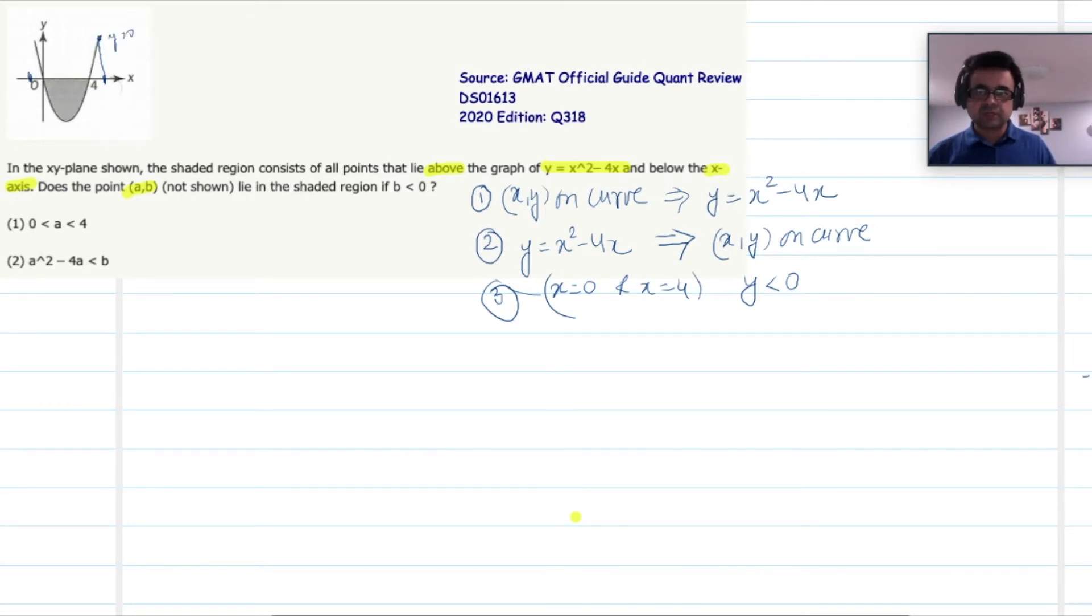Same thing here, if x was somewhere less than 0, then the y will be greater than 0. So only within this area, where x equals 0 and x equals 4, between these two values is y negative for the curve. I am talking for the curve only.